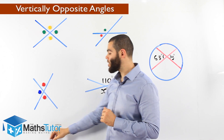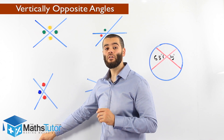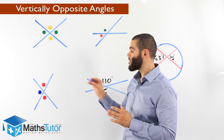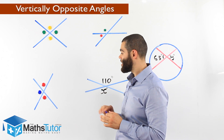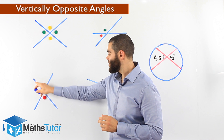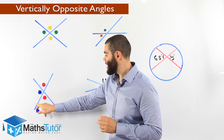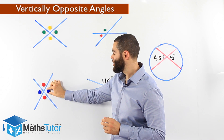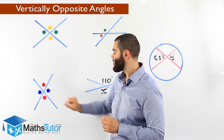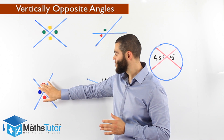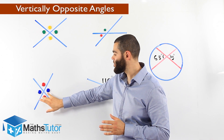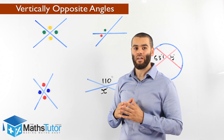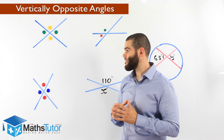Now we want to locate the vertically opposite angle to the blue. As you can see, the blue angle is there, and right opposite is there. So those are the vertically opposite angles, as you can see.